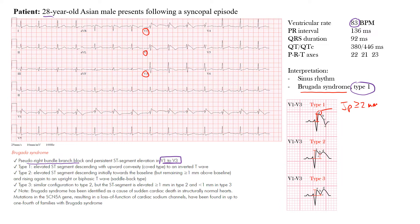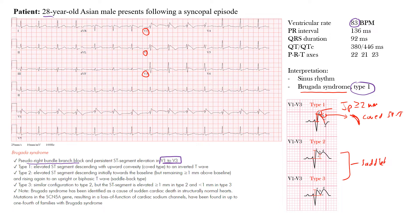Point B is the coved morphology of the ST-T wave segment — that upward convex sloping of the ST segment. This is different from types 2 and 3, where we see more of a saddleback ST-T wave segment.